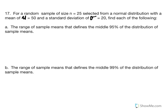Number 17: for a random sample of n equals 25 selected from a normal distribution with mean 50 and standard deviation 20, find the range of sample means that define the middle 95% of the distribution of sample means. Here we're solving for m. The equation is: m equals mu plus the standard error of the mean multiplied by the z-score, because we want to find what m equals rather than a probability.